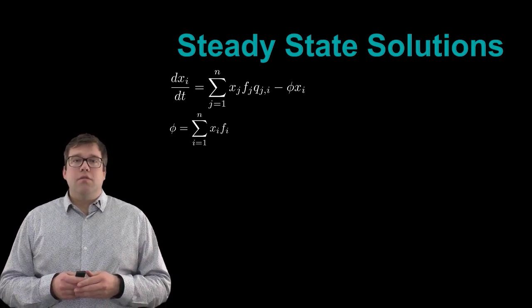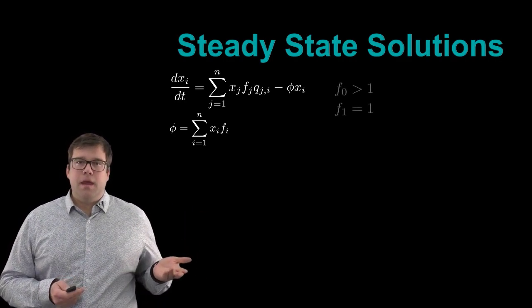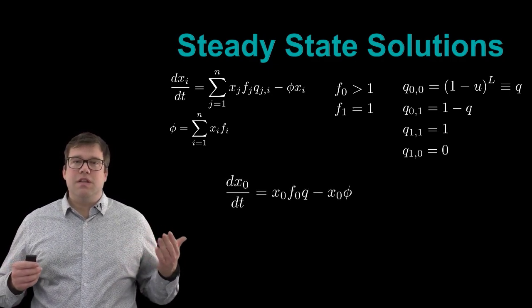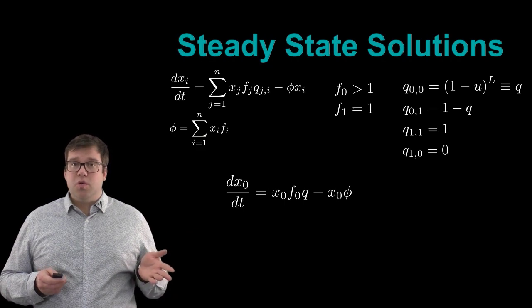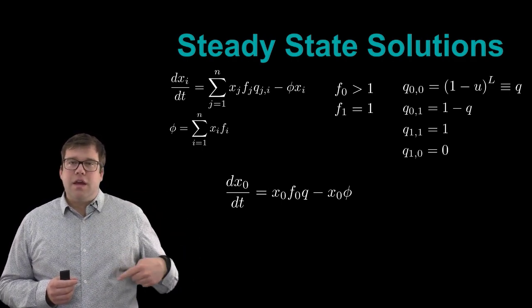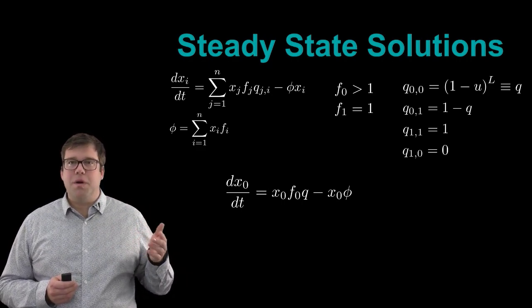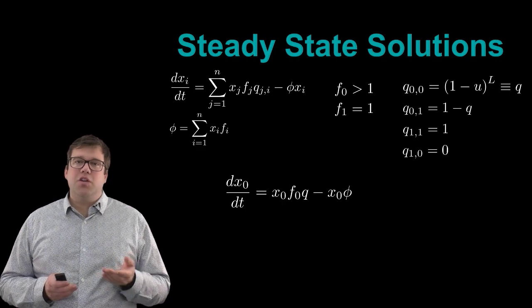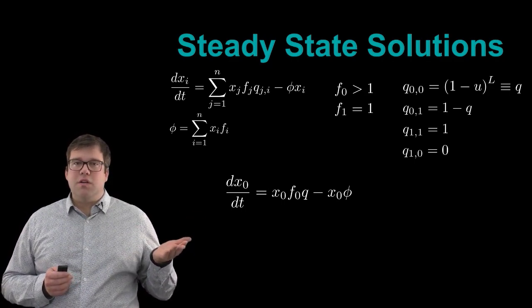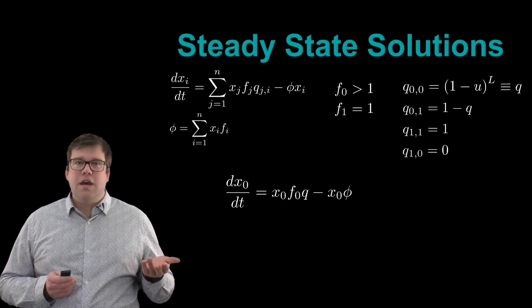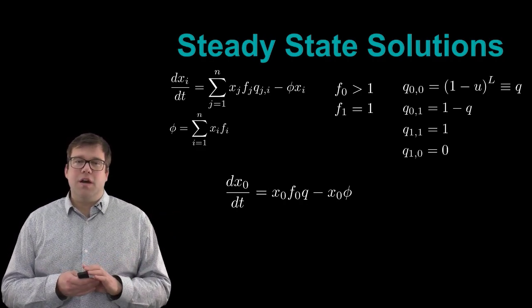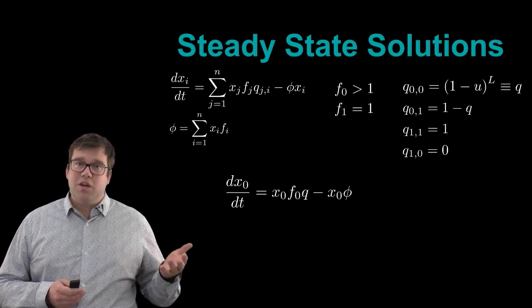Taking these mutation rates together and coupling them with the quasi-species equation, we obtain that dx₀/dt equals x₀ f₀ q minus x₀ phi, where q — shorthand for (1 − μ)^L — is the error-free replication probability of the master sequence. Because we only have a two-state model, the complicated sum in the quasi-species equation reduces to this simple expression.